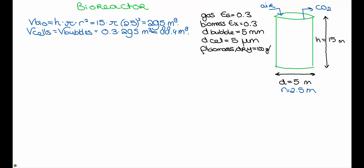The volume of a single bubble is: V_bubble equals 4/3 times π times r cubed, where the radius is the diameter divided by 2, which is 2.5 millimeters. This gives a single bubble volume of 6.5 times 10 to the minus 8 cubic meters.